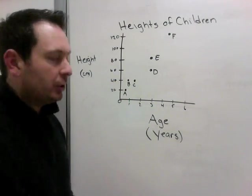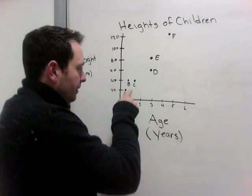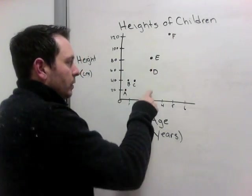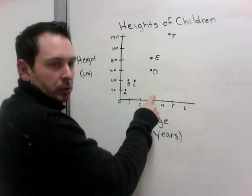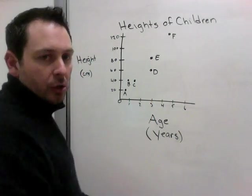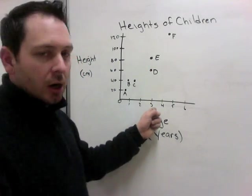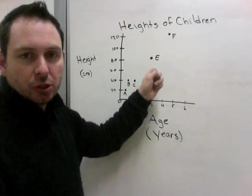Which two children are the same age? Well, A, B, C, here we go. D is 3 years old. E is 3 years old. So D and E are the same age.